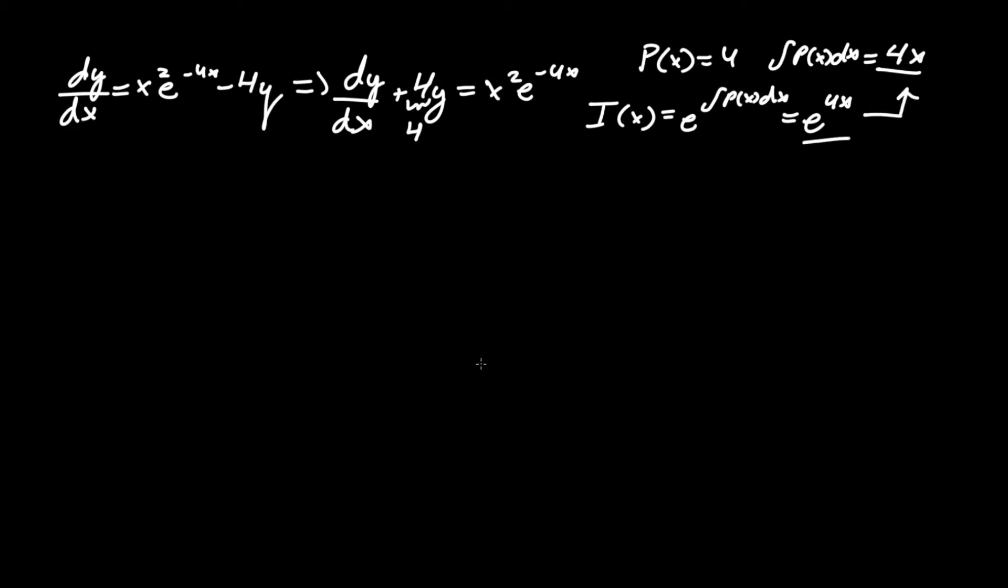Now, that is our integrating factor. We are going to multiply everything from this standard form by e to the 4x. Essentially, it's just e to the 4x dy/dx, plus, we'll put the 4 in front, 4 times e to the 4x y, equals,